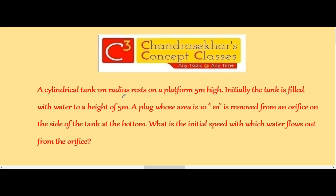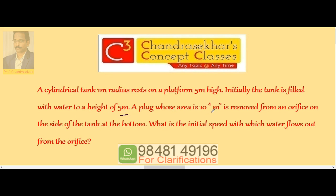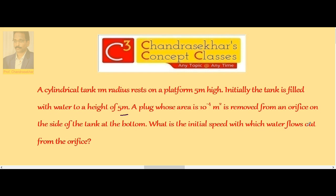A cylindrical tank 1 meter radius rests on a platform 5 meters high. Initially, the tank is filled with water to a height of 5 meters. A plug whose area is 10 to the power of minus 4 meter square is removed from an orifice on the side of the tank at the bottom. What is the initial speed with which water flows out from the orifice?